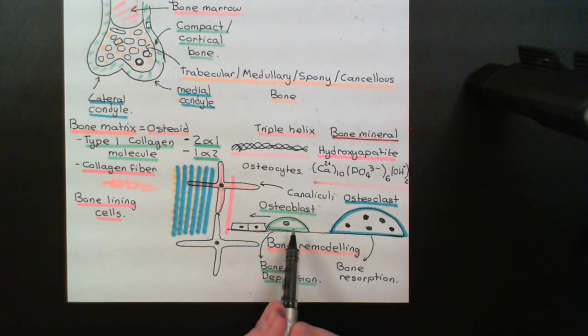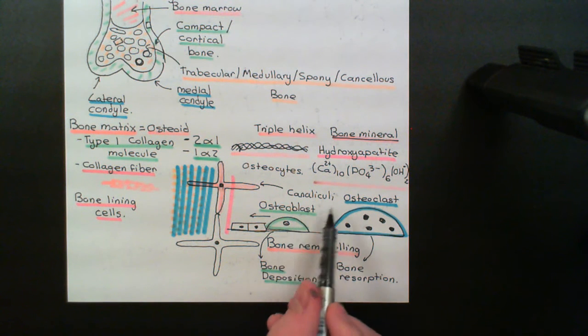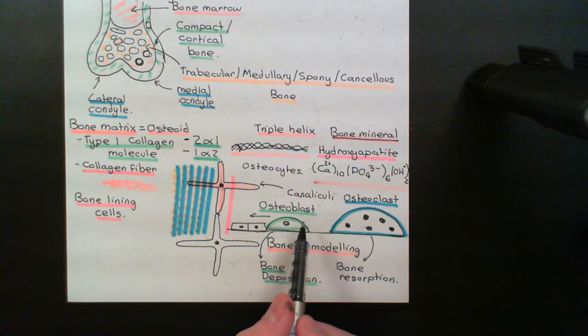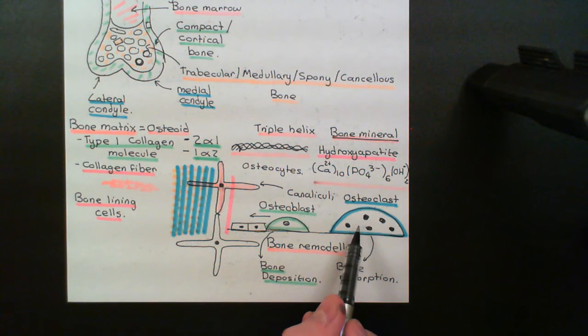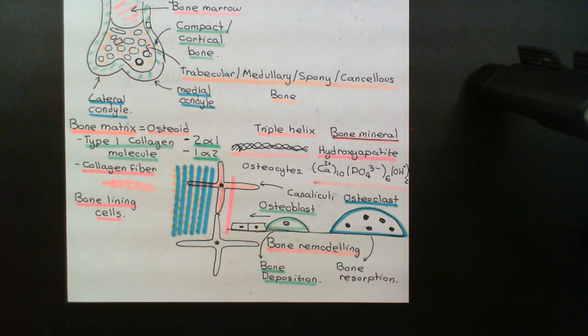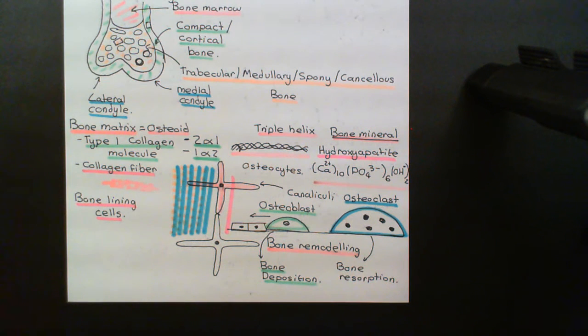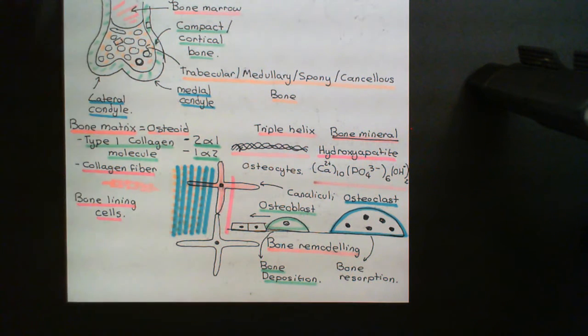The osteoblasts are going to call for more osteoclasts to be made, and they're also going to activate the osteoclasts that are already there. I want to give a brief description of how this actually occurs.